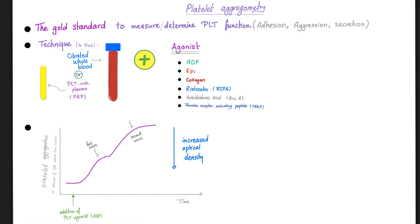Platelet aggregometry in a nutshell: it has become the gold standard to measure or determine platelet function — adhesion, secretion, aggregation. The bleeding time is less reliable because it depends on skin thickness, the puncture wound, etc. The technique uses citrated whole blood or platelet-rich plasma. The agonists are ADP, epinephrine, collagen, ristocetin, arachidonic acid, and TRAP. As you add the agonist, you get two waves: primary aggregation and secondary aggregation of the platelets.